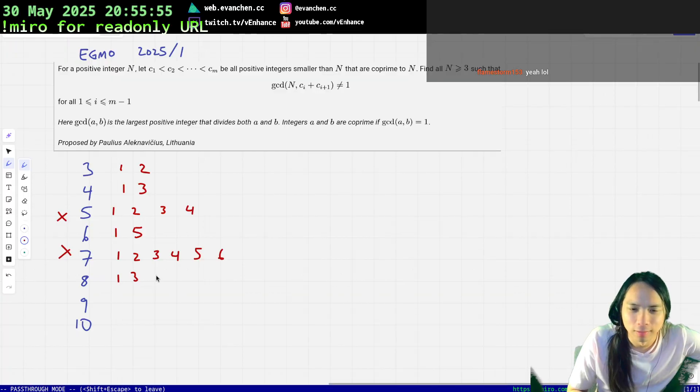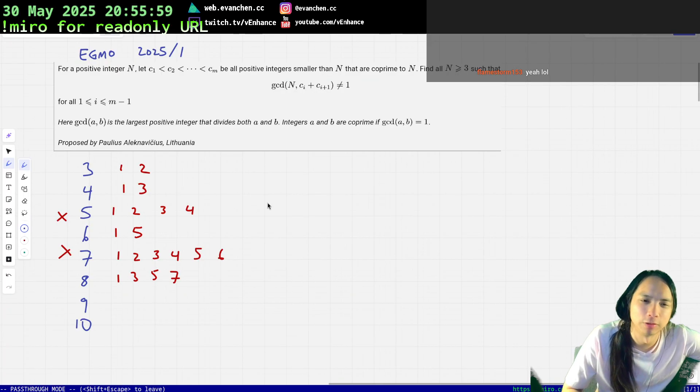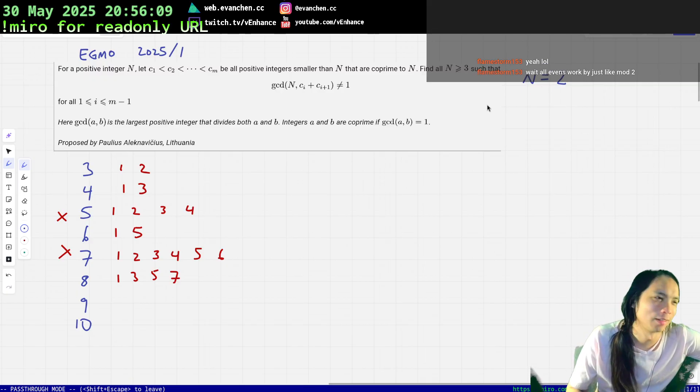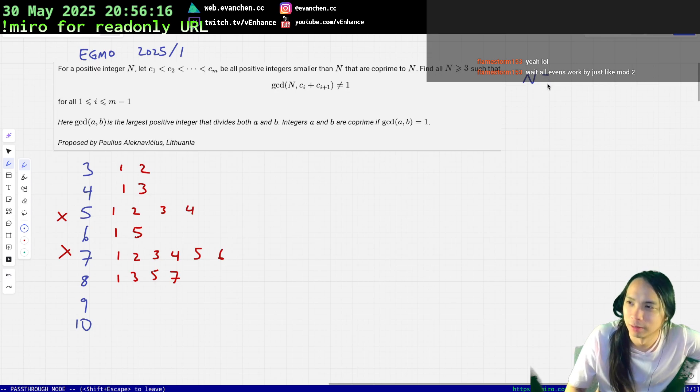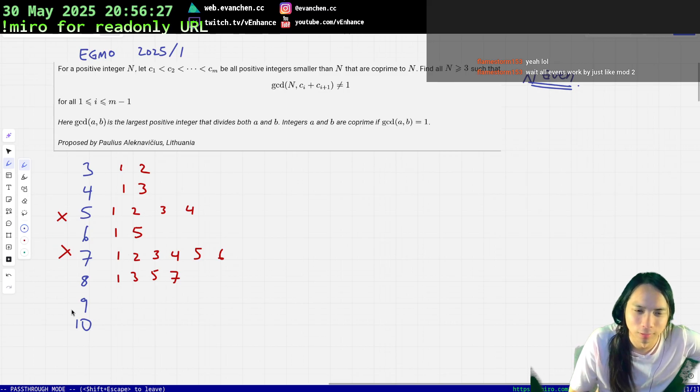Let's look at eight: one, three. Oh my god, it actually works. Does every power of two work? I think every power of two is okay because every even number is okay, since all the c_i's are odd and then you find n. So n even passes, and then n equals three is a sporadic case, I'm assuming. N even is okay.